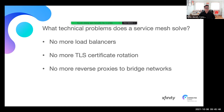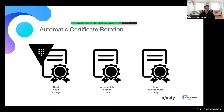What technical problems does a service mesh solve? No more load balancers — services are discovered through the mesh with more advanced routing capabilities. We don't need to worry about TLS certificate rotation; the mesh handles that. Console connect signs certs and rotates them automatically. We also don't need reverse proxies to bridge our networks. We get all the standard mesh capabilities: discovery, circuit breakers, traffic shaping, and layer 7 access policies. We're using Vault as our root. The Vault root signs our intermediates, each data center gets an intermediate cert, and each intermediate signs the leaf certs for microservices. The root rotates every 90 days, intermediates every year, and leaf certs have a three-day rotation.